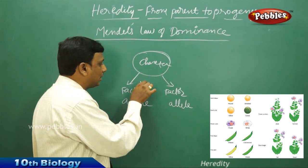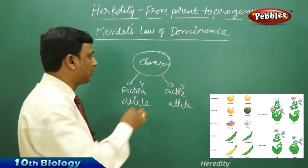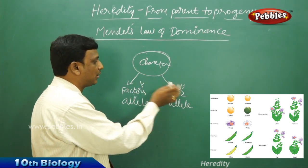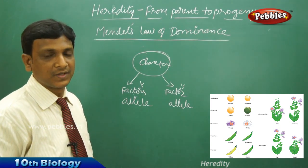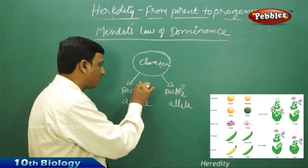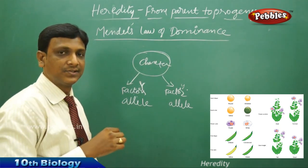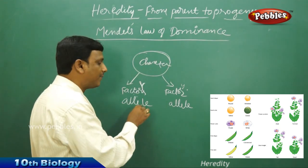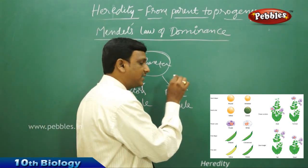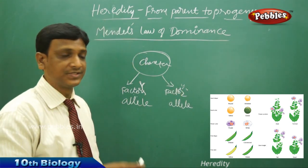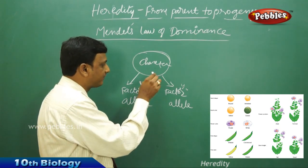In the previous example with the pea plant, one factor is yellow and the other is green. It is not showing any mixed result between yellow and green color — it will be either yellow or green. The factor yellow is dominating the green. This allele is called the dominating factor, whereas green is a recessive factor — it is dominated by yellow. Even though both factors are present, only one factor is expressed.